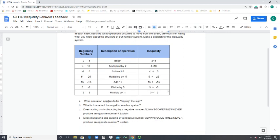Then it asks us what operation appears to be flipping the sign. So if I go back and find out, here I went from less than to greater than. What happened? Multiplied by a negative 5.